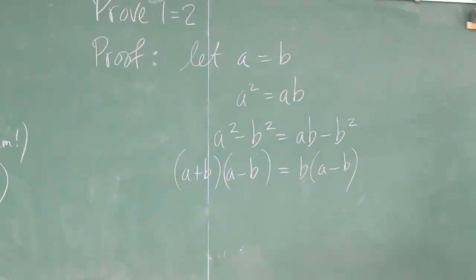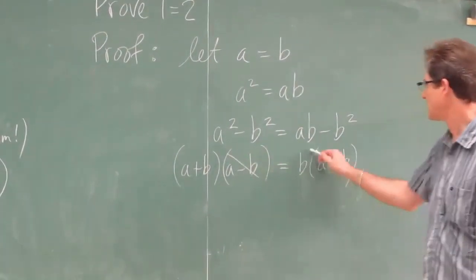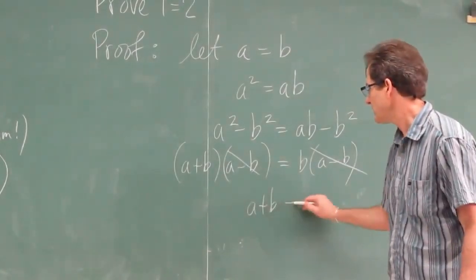Now, we're drawing down before you say anything. At this point, I can divide both sides by A minus B. I can just cancel A minus B. So I get A plus B equals B.